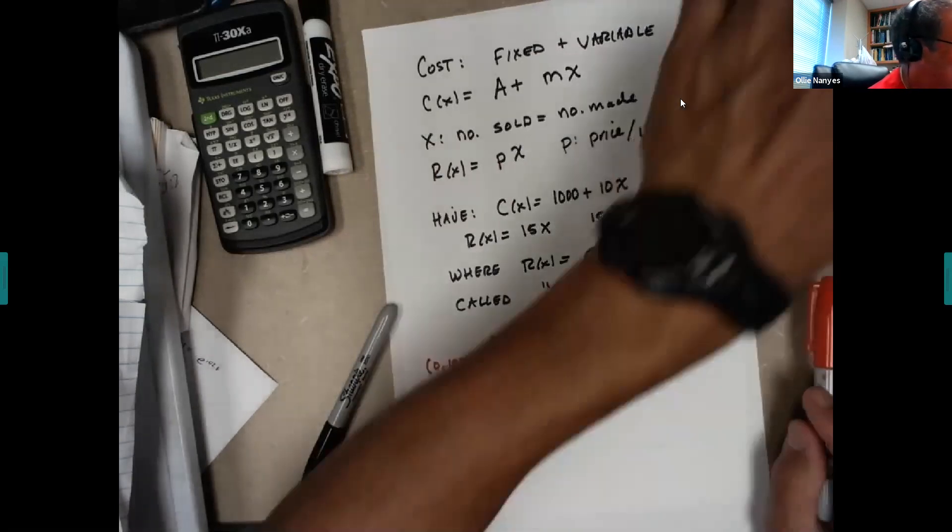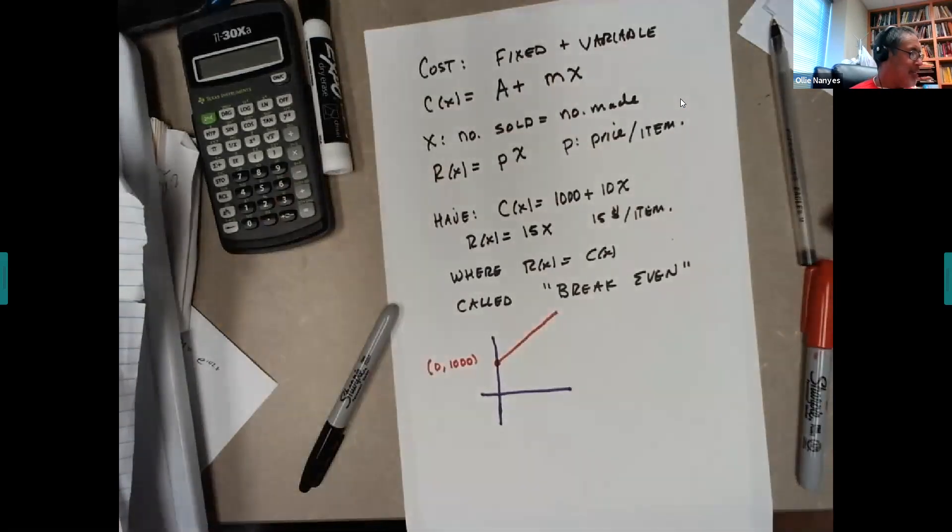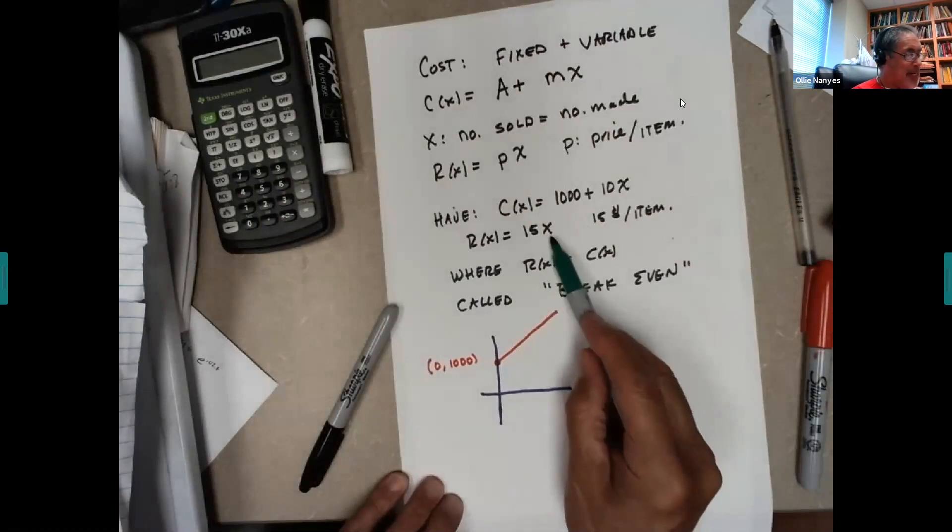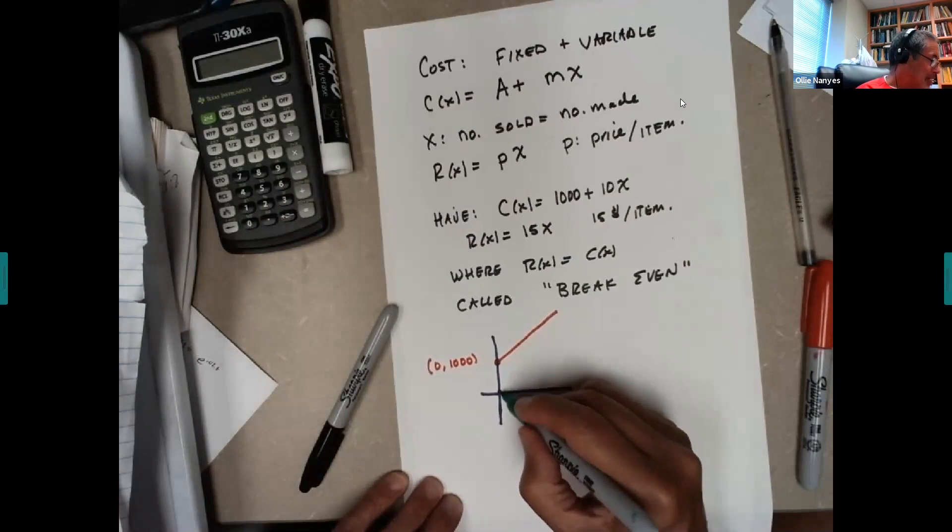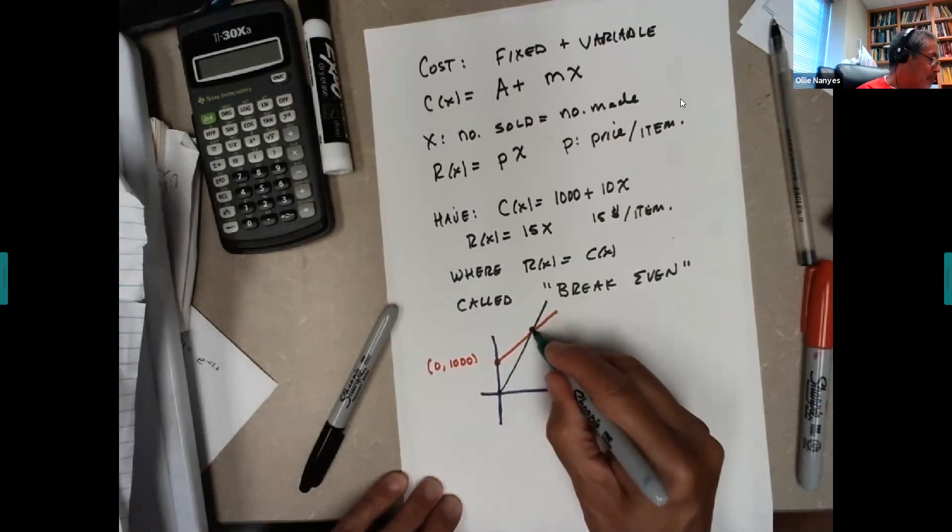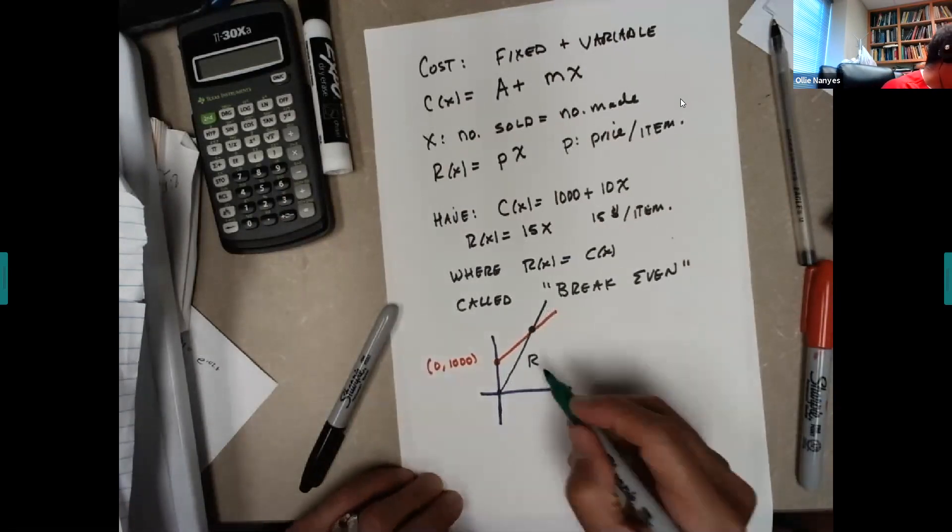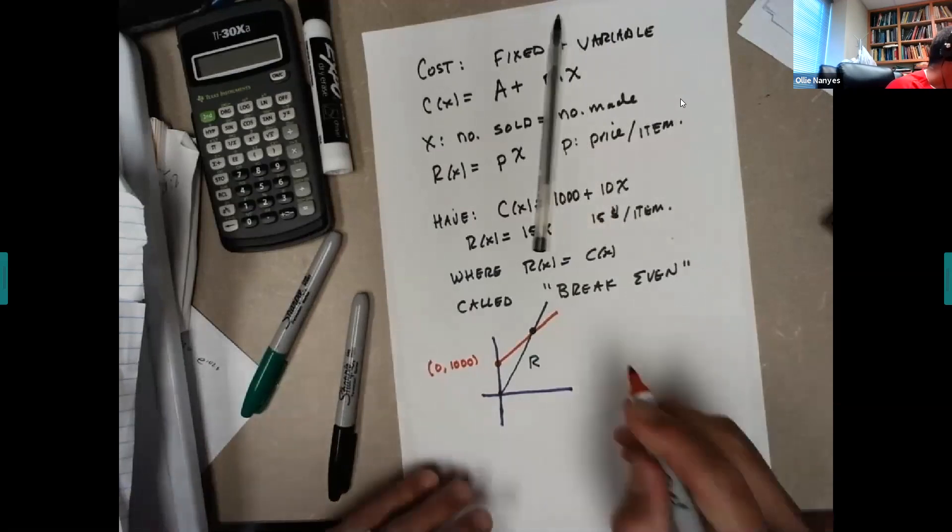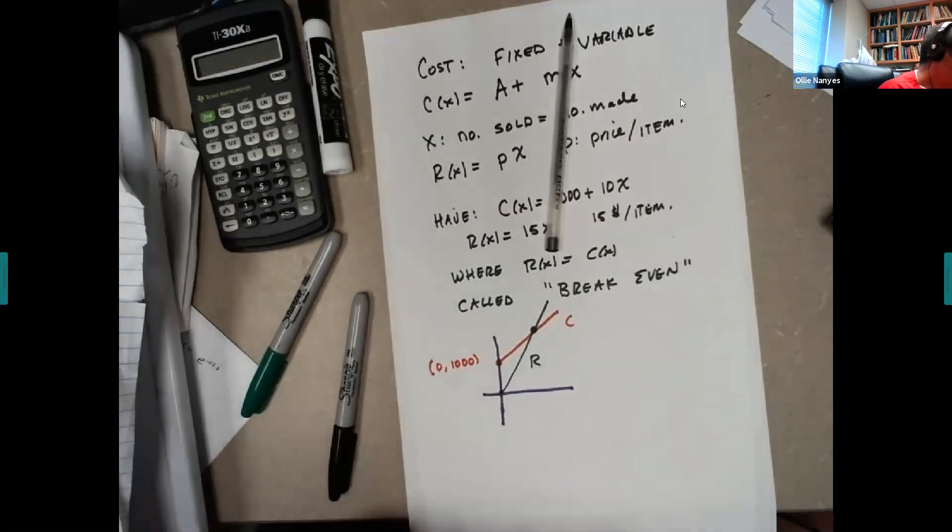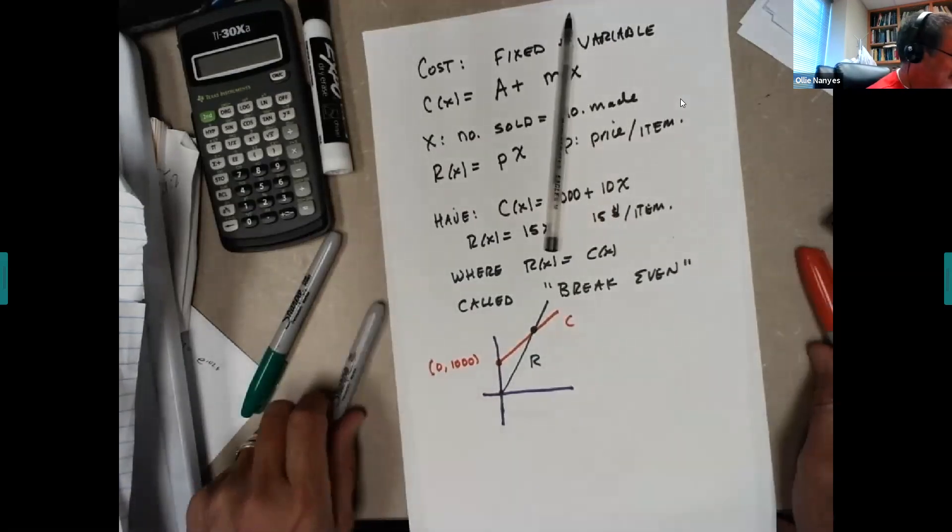On the other hand, revenue, if you put an X equals 0, you get 0. So that's a line through the origin. And it has a steeper slope. So this will be the revenue. This will be the cost. And this point right here is called break even.